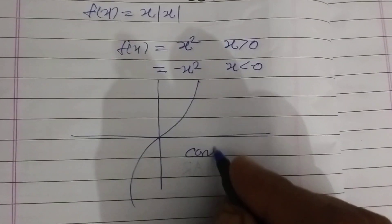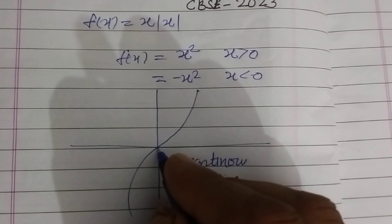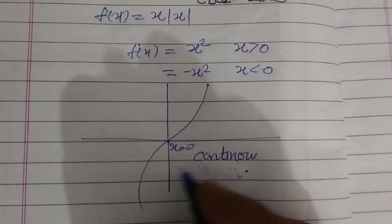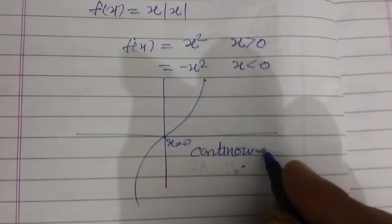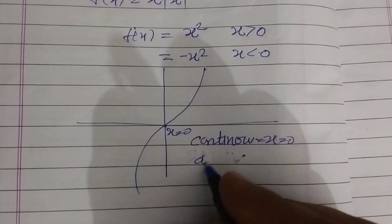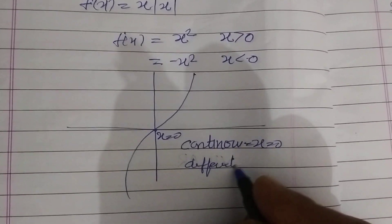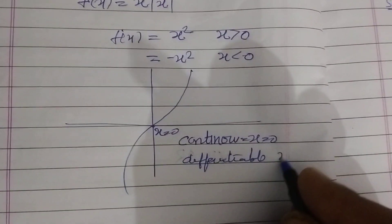So, continuous at x equal to 0 here x is equal to 0 and differentiable at x equal to 0.